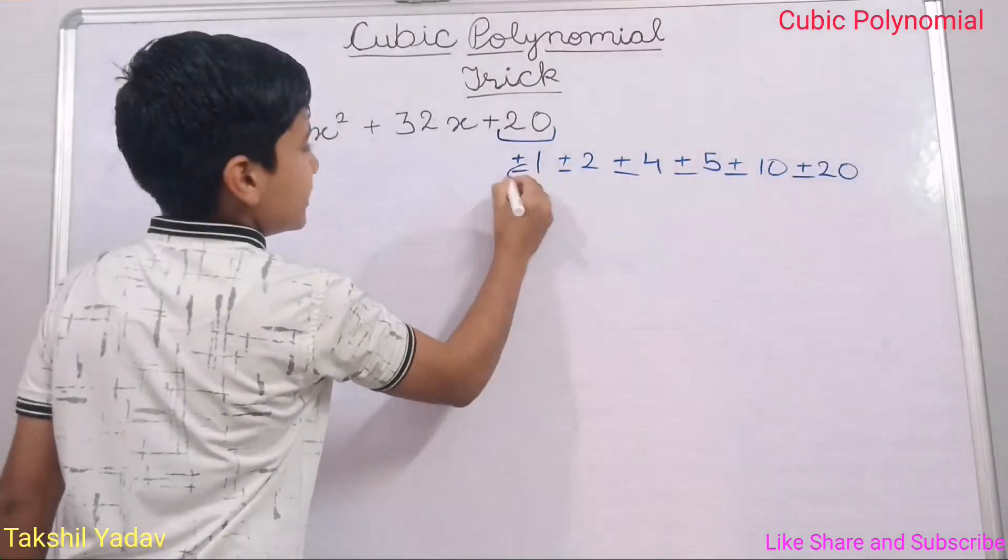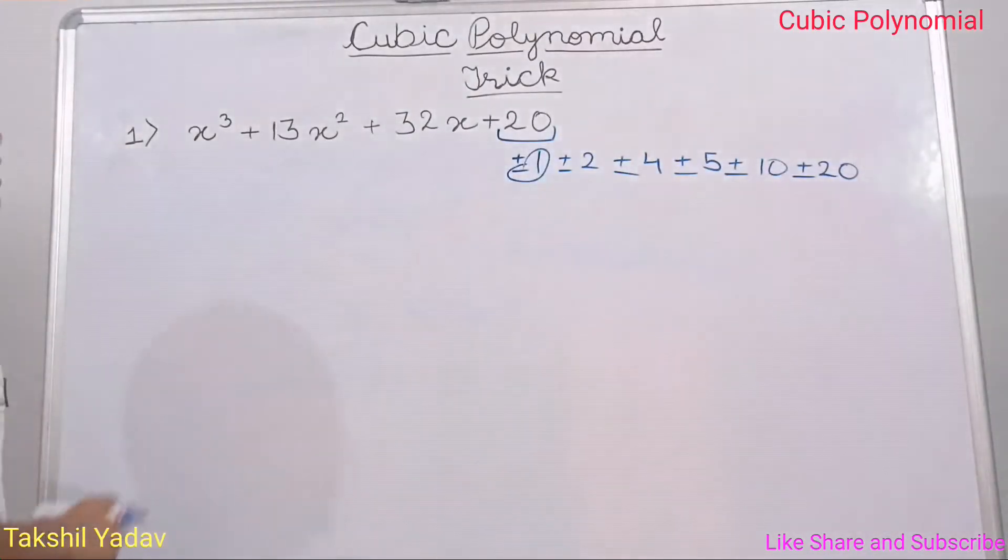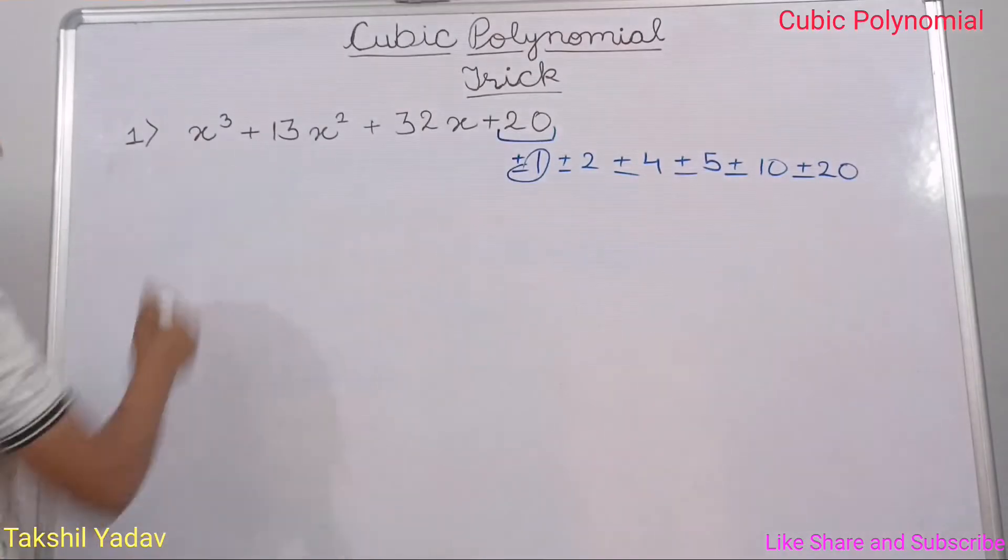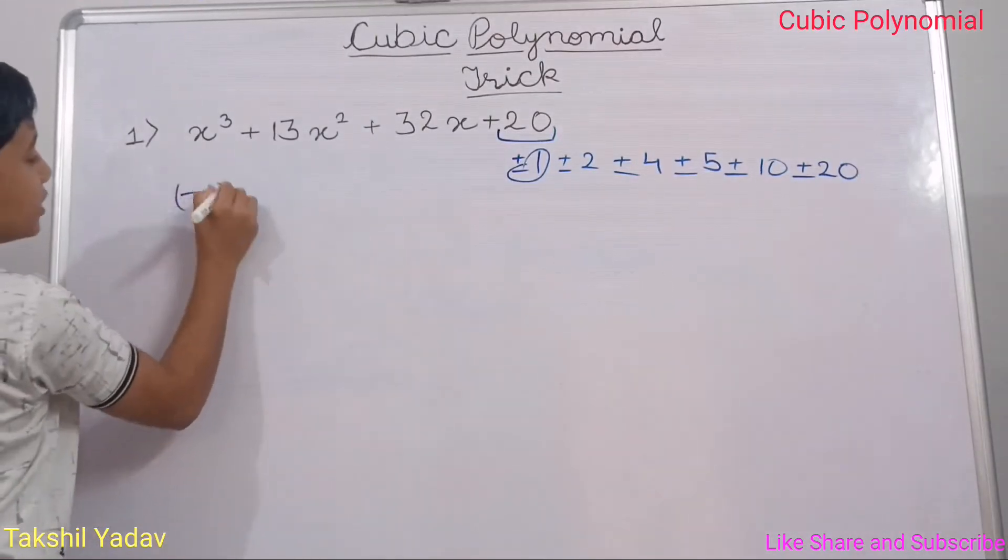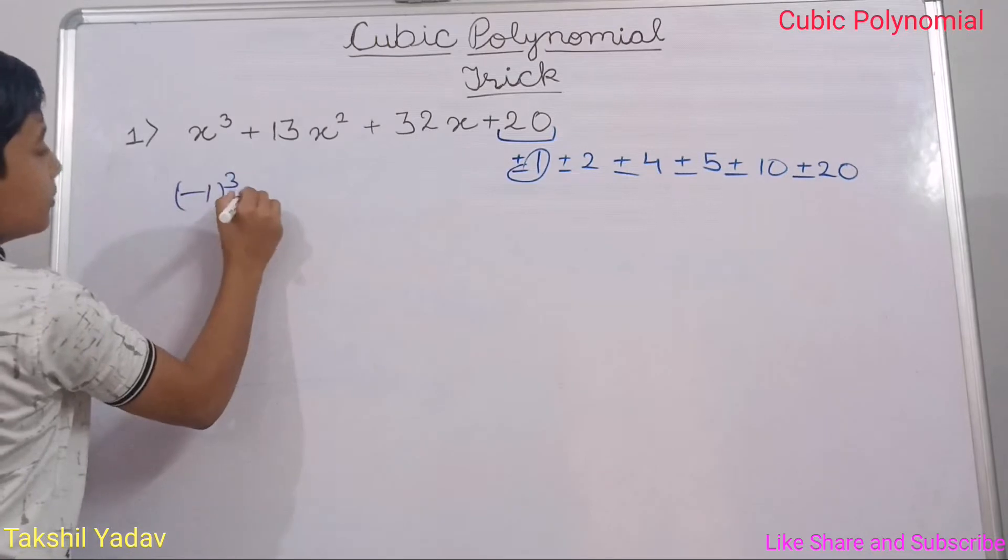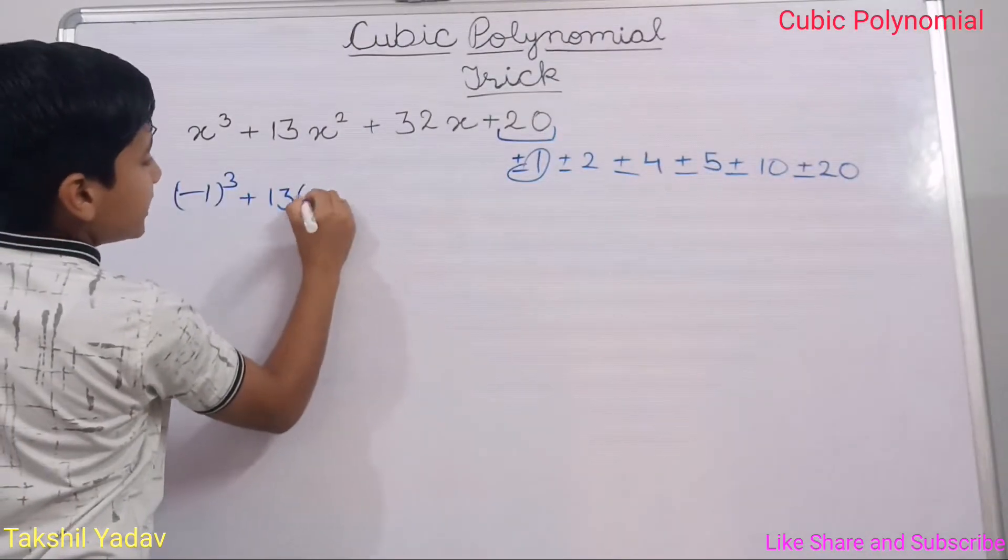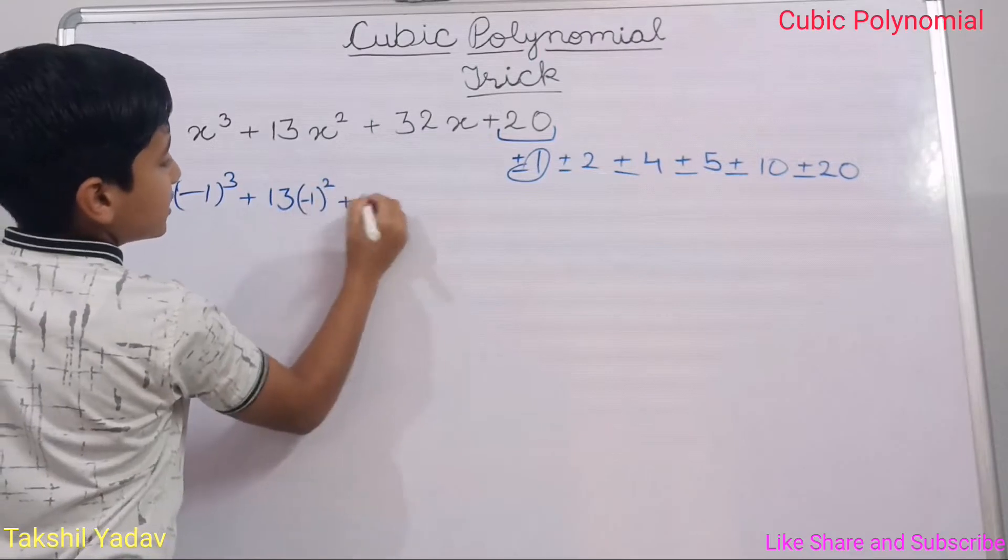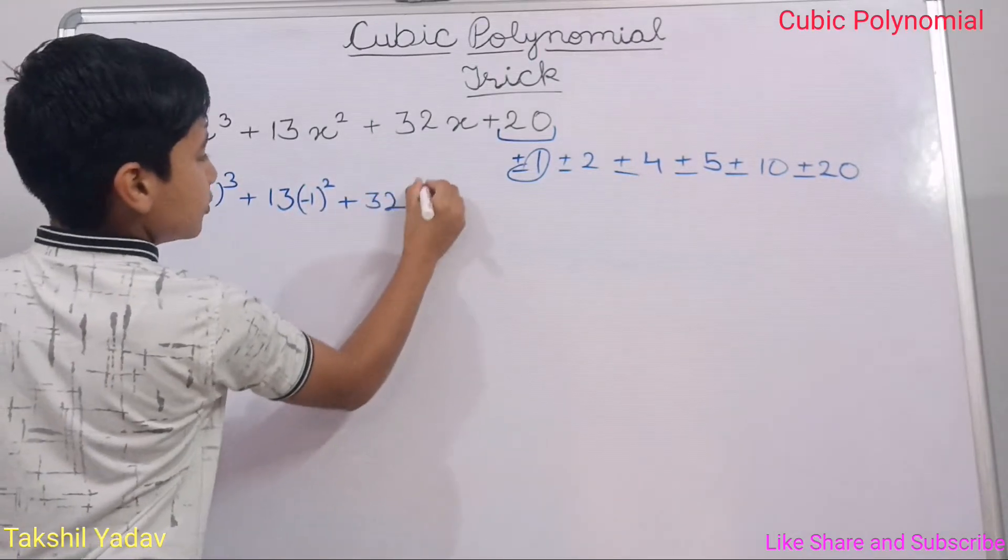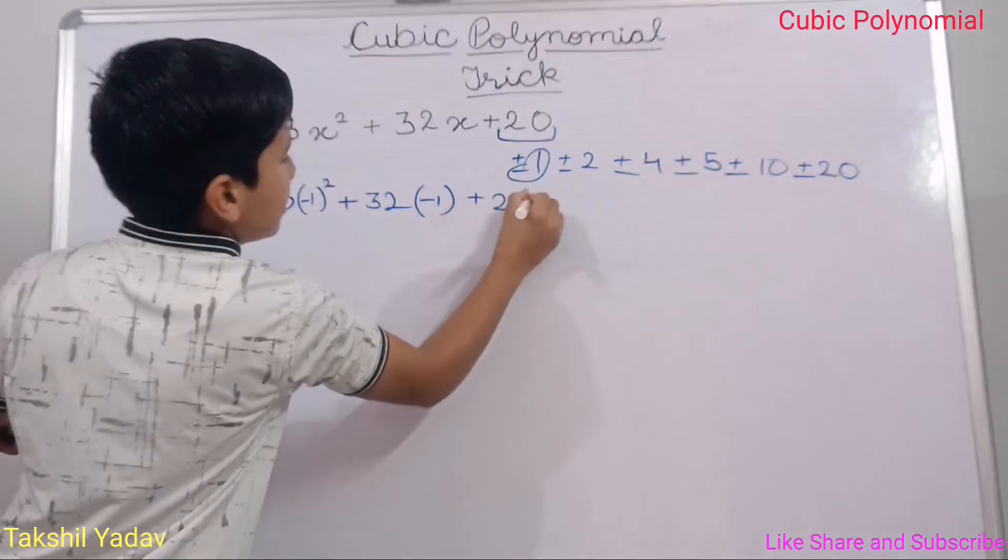I will take the value as negative 1. Putting x as negative 1, I get negative 1 cube, plus 13 into negative 1 square, plus 32 into negative 1, plus 20.